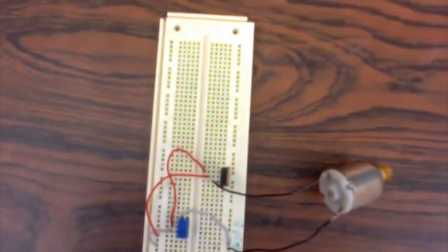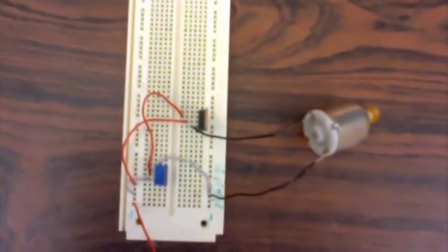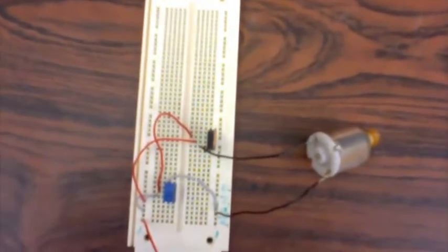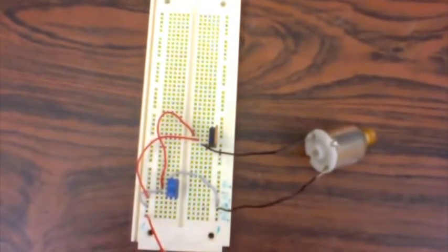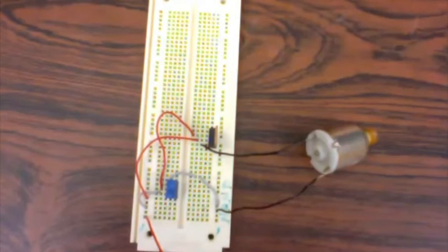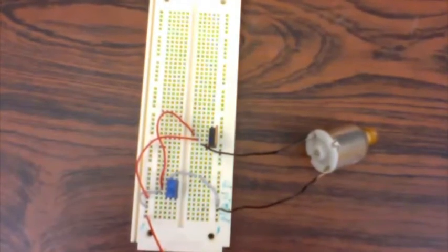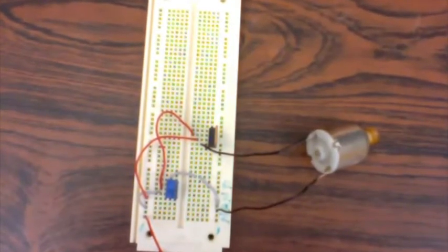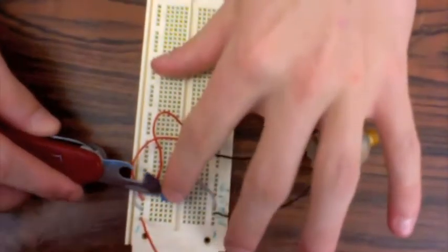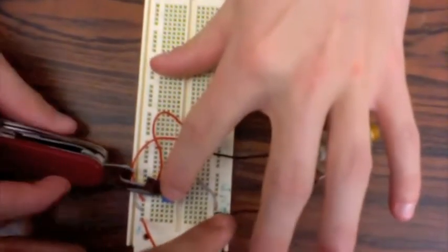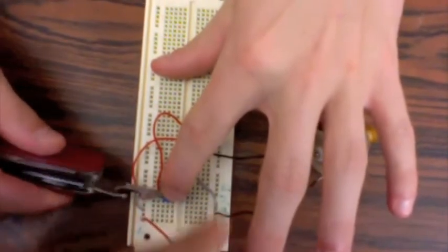So here we are with the breadboard. Right now I'm going to use the potentiometer as a voltage divider. When I adjust the potentiometer, I can control the voltage at the base of the transistor. The more voltage at the base of the transistor, the more current will flow from the collector to the emitter, which makes the motor turn faster. I'm going to demonstrate that right now.